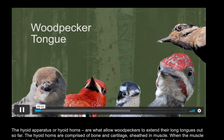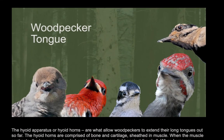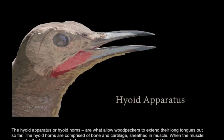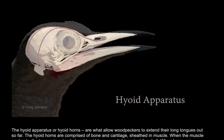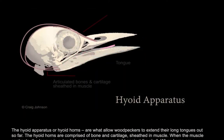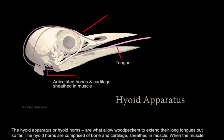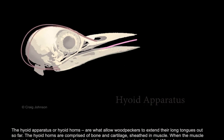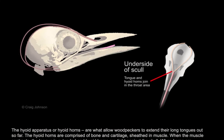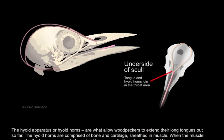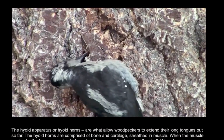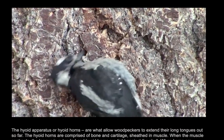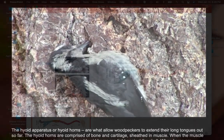Ever wonder how a woodpecker can extend its tongue so far? Notice the hyoid horns or bones — these articulated bones and cartilage are covered in muscle. When they are contracted, the tongue is extended, and when relaxed, the tongue is retracted. An adult northern flicker's hyoid horns connect in the right nostril. Here's a juvenile male hairy woodpecker using his long tongue to extract insects and their larvae from the bark.